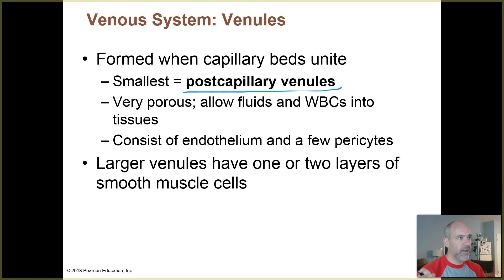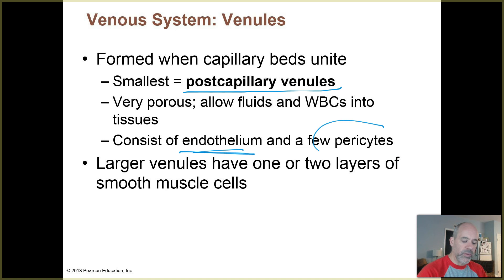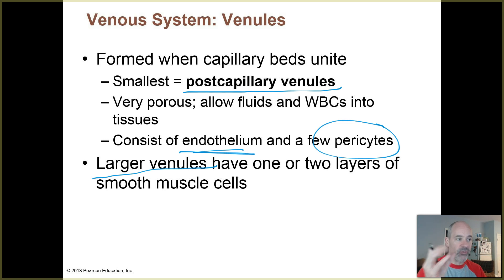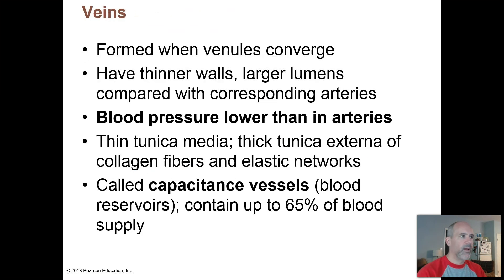Post-capillary venules are very thin and tiny — they just have the endothelium, that single layer of cells, with a few pericytes, the supporting cells that can surround them and form the walls. Those post-capillary venules lead to larger venules, which are still at the microscopic level, but there they can have one or two layers of smooth muscle cells, so they can be constricted or allowed to dilate as needed.